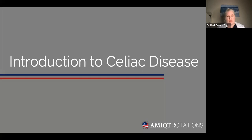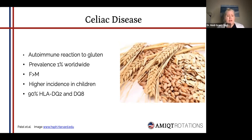So celiac disease — most of us are pretty familiar with celiac. It's an autoimmune reaction to gluten. Typically the protein in gluten is called gliadin, and that's the one that people react to. The prevalence is about 1% worldwide, and it has a slightly higher rate in females versus males, but it's very small.